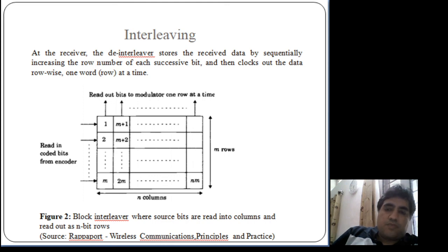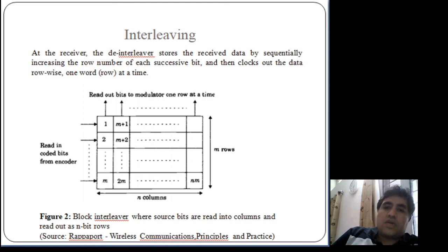When the interleaver output is transmitted, the operations performed at transmission must be reversed at reception. At the receiver, a de-interleaver stores the received data by filling successive bits row by row and then clocking out the data row-wise, one row at a time. By doing this, we are able to spread out the signal of the speech encoder and protect it from burst errors.